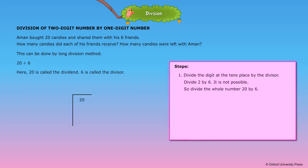Steps: 1. Divide the digit at the tens place by the divisor. Divide 2 by 6. It is not possible. So divide the whole number 20 by 6.